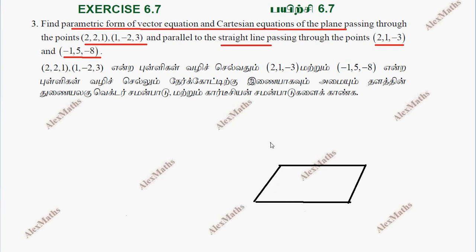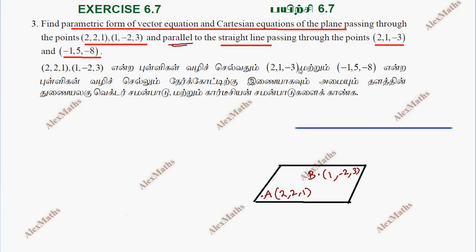Point A is the first point with coordinates (2, 2, 1). Point B is somewhere with coordinates (1, 2, 3). Point C has coordinates (2, 1, -3) and point D is (-1, 5, -8).